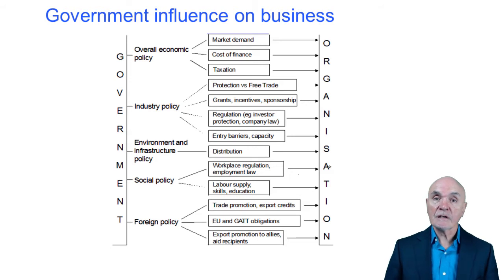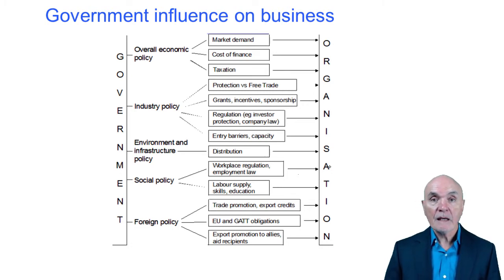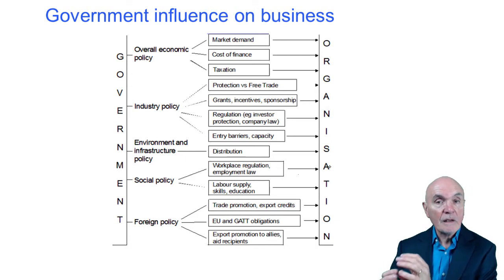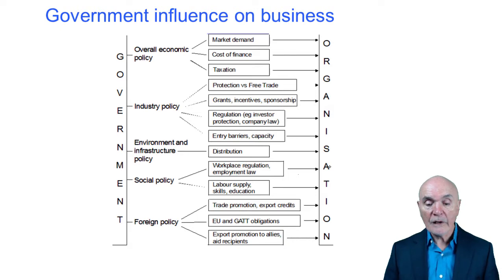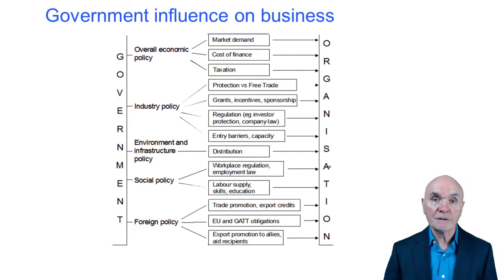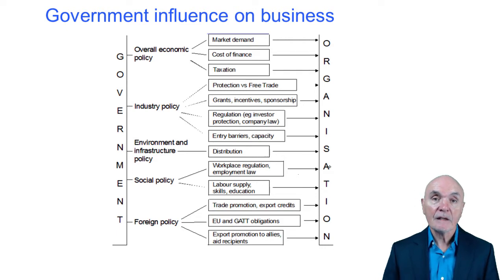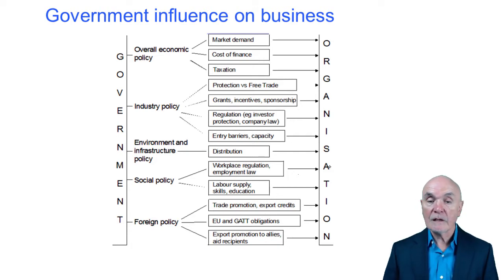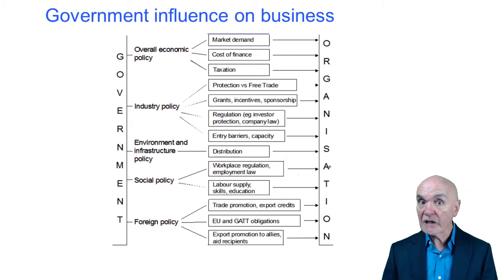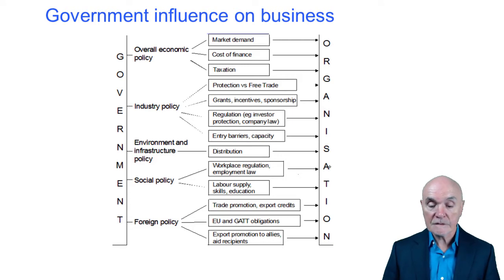The government can try to encourage certain areas — it can give grants, for example to set up high-tech industries, or to get companies to set up in areas of the country which have got high unemployment. Regulation — how easy is it to set up a business? In the UK it's pretty easy — you just register a company with Companies House and you're ready to go. Entry barriers and capacity: sometimes the government will limit the number of businesses of a particular sort it wants set up, for example saying we have enough television channels and won't allow another one until one goes out of business.